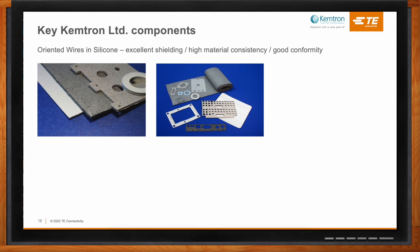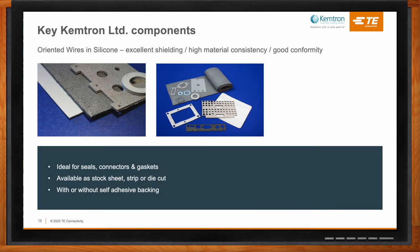Moving on to the third type of material: oriented wires in silicone. These materials offer excellent shielding, they're cost-effective, and they can also provide an environmental seal. They're available with either a silicone or a fluorosilicone binder. These materials differ from conductive elastomers in that the conductive path is produced by a matrix of wires laminated into the material in the Z-axis. This is a flat gasket material ideal for small flat gaskets for connectors and larger flat gaskets, and we can fabricate it into very large gaskets. It's available as stock sheet material, in strip, or as a die-cut or fabricated gasket, and is available with or without self-adhesive backing.